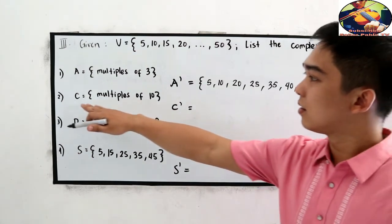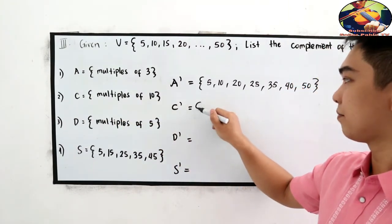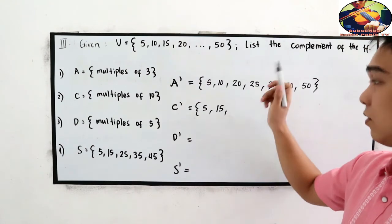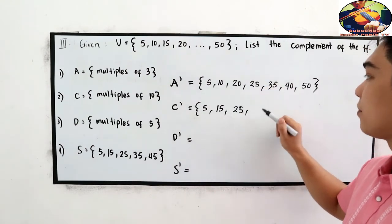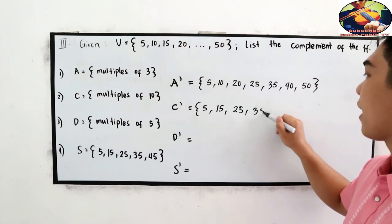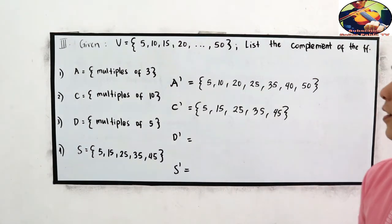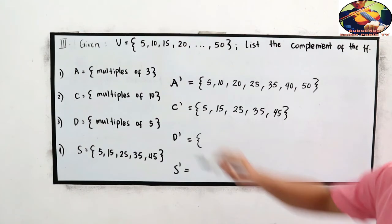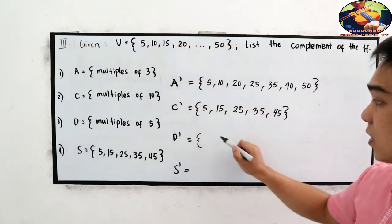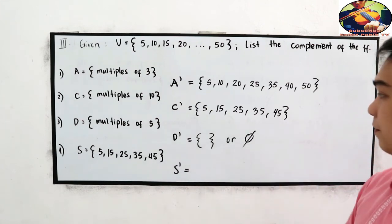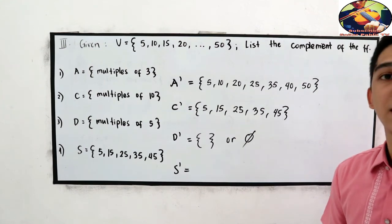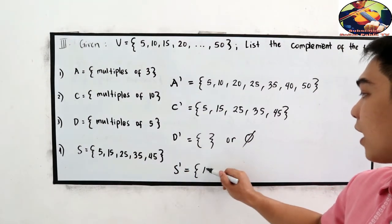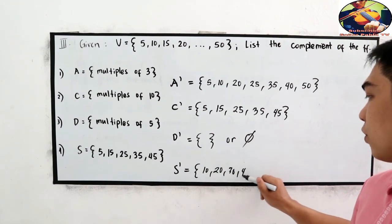For number 2, set C = multiples of 10. C prime = elements not divisible by 10 = {5, 15, 25, 35, 45}. For number 3, set D = multiples of 5. Since our entire universal set consists of multiples of 5, D prime is the empty set. For number 4, S = {5, 15, 25, 35, 45}. S prime = the remaining multiples of 5 = {10, 20, 30, 40, 50}.